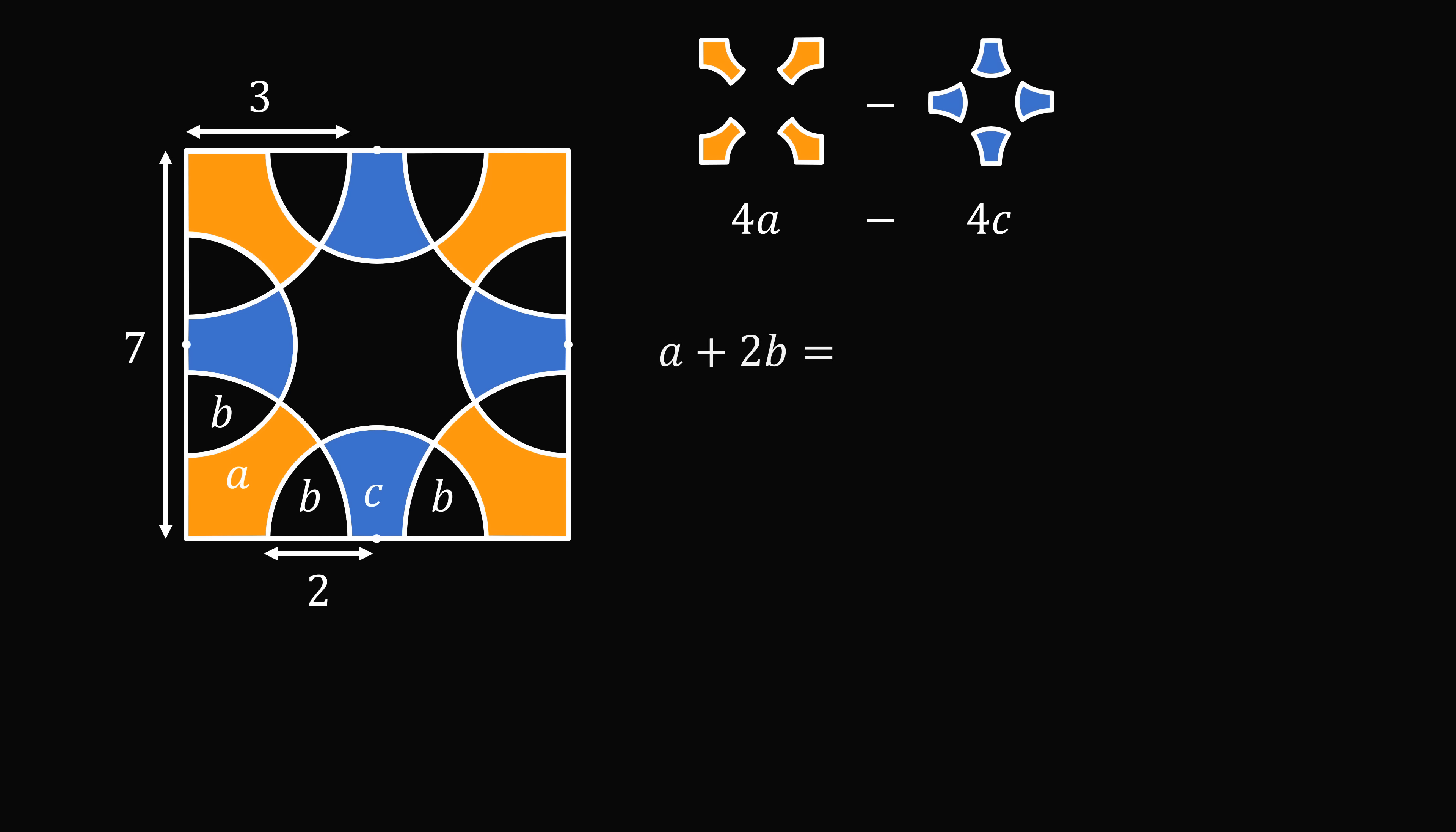Furthermore, a plus 2b will be equal to the area of one quarter circle. Then, the area of the semicircle will be c plus 2b. And now comes the magic. We'll multiply each of these equations by 4.